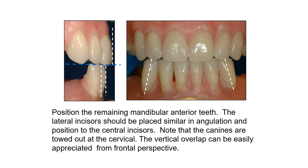After arranging the upper teeth, we check the midline of the lower coinciding with the upper, and we adjust the overjet — the horizontal and vertical spaces between the upper and lower teeth. The canine is given a slight toed-out position at the cervical area to follow the inclination of the ridge.